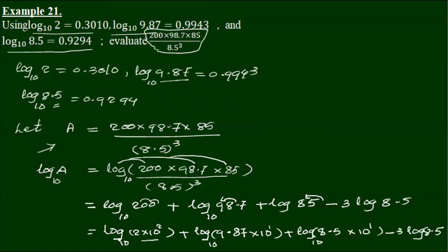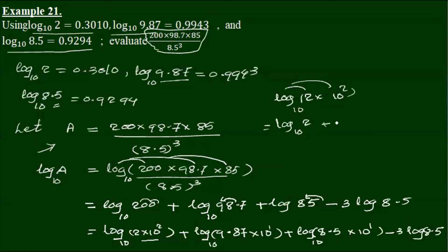We will get log 2 into 10 squared, base 10. So log 2 base 10, plus 2 squared, which is 2 log 10 base 10. Since log 10 base 10 is 1, that gives us 2 squared, which is 2.